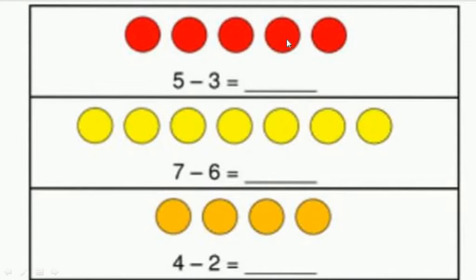These are 5 red color balls. We have to cross out 3. Among this group of 5 circles, we cut 3: 1, 2, and 3. How many circles are remaining? There remain 2 circles, which we write in the box.